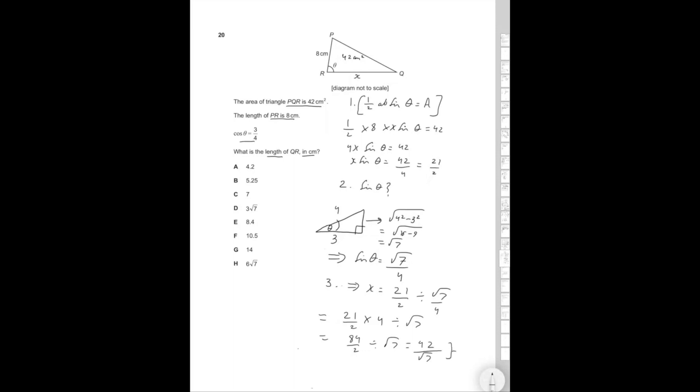Now we need to rationalize this. So you multiply both top and bottom by root 7. That's going to be equal to 42 root 7 over 7. We know that 42 divided by 7 is 6. So therefore, the correct answer is going to be 6 root 7, which is answer option h.